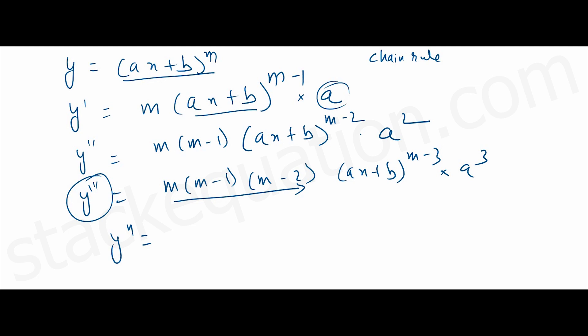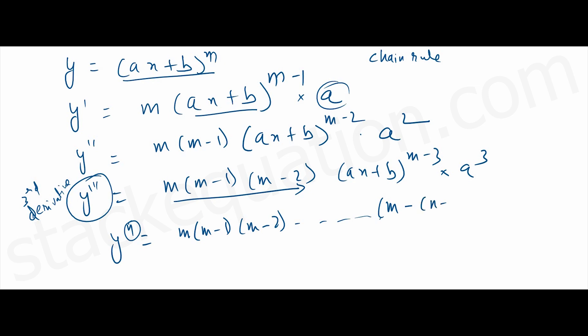So if I have to write the nth derivative: m(m-1)(m-2)... it will go until one less than n. Like here it goes to (m-2) for the third derivative. So here it will go up to (m-n+1), into (ax + b)^(m-n). For the third derivative the exponent of a is 3, so a to the power n.